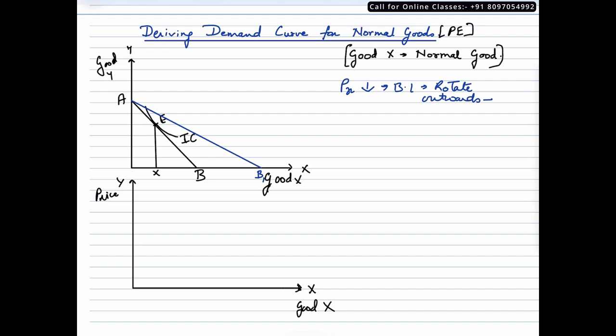So the new budget line now is AB1. Now we need to remember that since the price of commodity X has gone down, this commodity is now relatively cheaper. That means the consumer will be able to buy